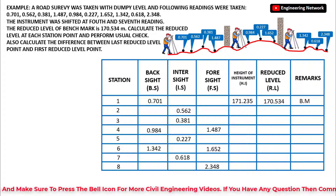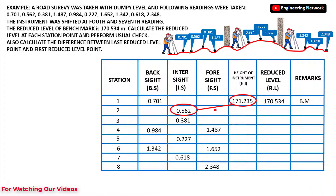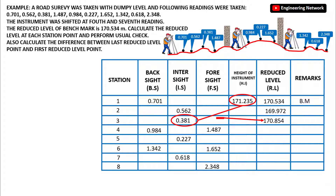I will use this HI to calculate the reduced level at the remaining station points. At station 2, reduced level equals 171.235 minus 0.562, giving 170.673. At station 3, reduced level equals 171.235 minus 0.381, giving 170.854. At station 4, reduced level equals 171.235 minus 1.487, giving 169.748 meters.